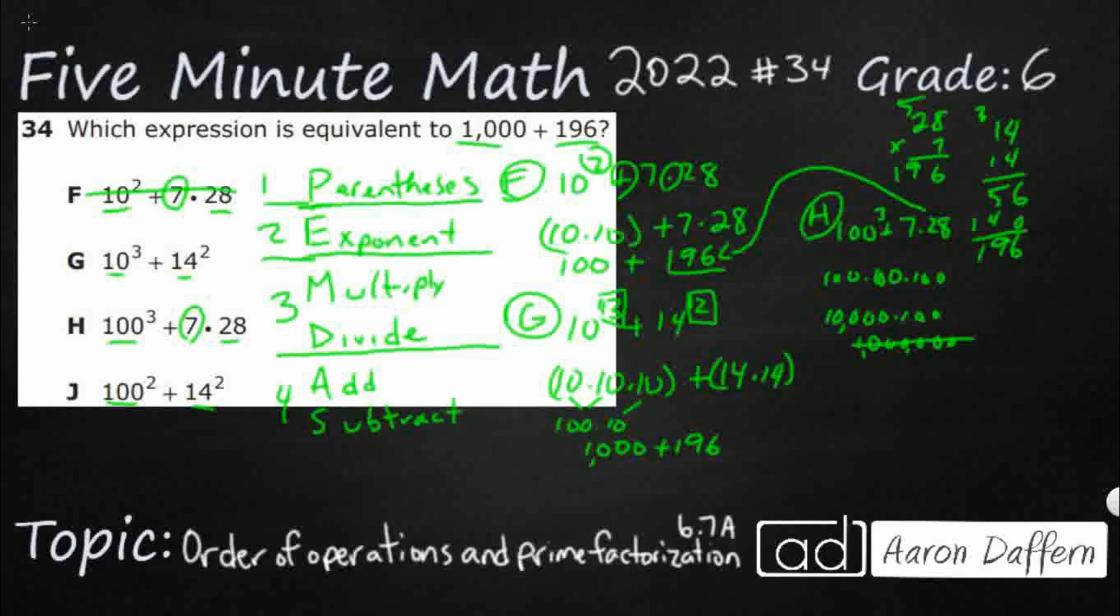So let's check J. We already know this 14 squared is correct. So we're just looking at this 100 squared. That's 100 times 100. And I'm just adding zeros is what I'm doing. One, the two ones multiply, make one, and I've got four zeros. So too many zeros. One too many. So my answer here is G.